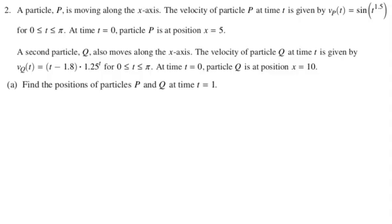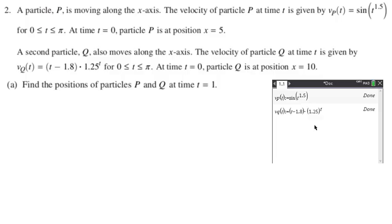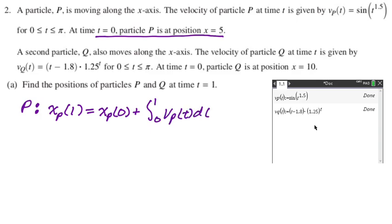Part A, find the positions of the particles, both of them, at t equals 1. So this is just rearranging the fundamental theorem. Step one here, store these on your calculator. So I have stored them as Vp of t and Vq of t. Make sure you're in radians. So for P, let's deal with it. Particle P is at 5 when you start, so t equals 0. So for P, I'm going to call it xp because they don't tell us what to call it, but it's on the x-axis. So at t equals 1, it's going to be where you started, so xp of 0 plus the integral from 0 to 1 of the velocity.